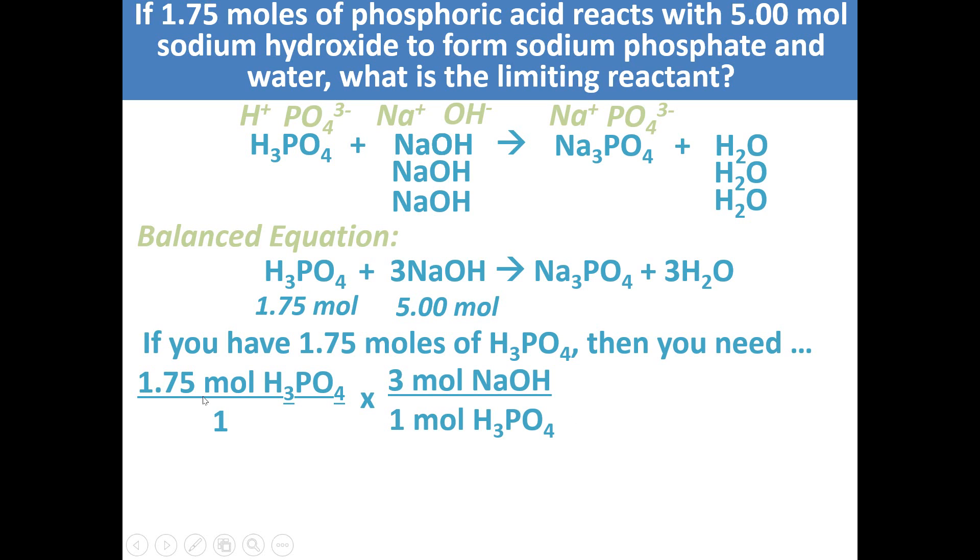We can do our calculation of 1.75 times 3 to get 5.25 moles of NaOH. This number represents how much NaOH is needed if you have 1.75 moles of H3PO4. So now we compare this amount that we need to the amount that's actually available.